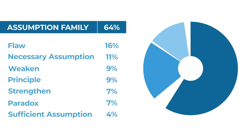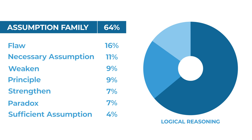If we organize our work around question types, we'll see there are a lot of different kinds of questions, and those question types can be grouped into three large families. The first family is the assumption family — 64% of all logical reasoning questions are in the assumption family. These questions measure our ability to evaluate arguments, so what we'll be looking for is the gap or problem with the argument, the flaw in its reasoning.